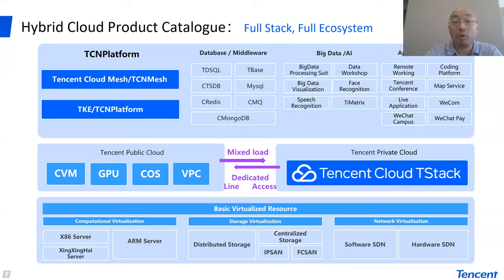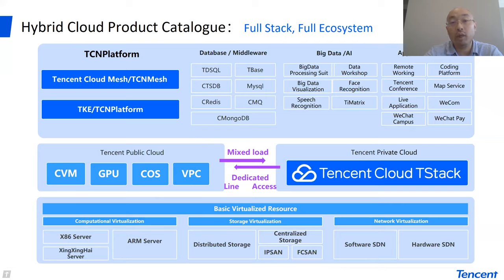In terms of network, we have two approaches: either software-based SDN solutions or hardware-based SDN solutions. Upon this basic virtualized resource layer, we built two categories of cloud — the public cloud and the private cloud. The public cloud is a standard public cloud as seen in the Tencent public cloud platforms, which has CVM, GPUs, cores, VPC, et cetera. The private cloud is the Tencent T-Stack solution we have already presented in previous summits.